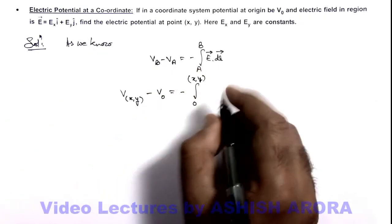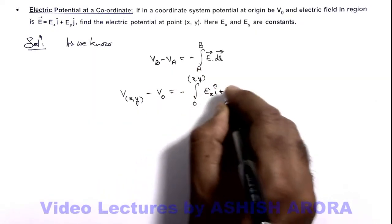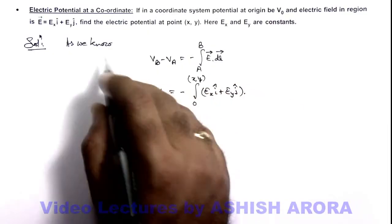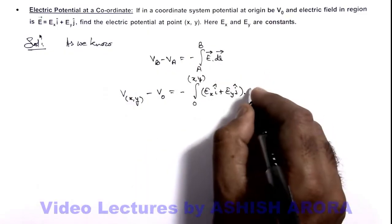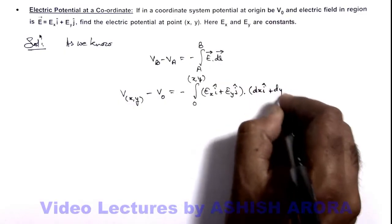And electric field in vector form we can write Ex i cap plus Ey j cap, and we can take its dot product with the dr vector which can be written as dx i cap plus dy j cap.